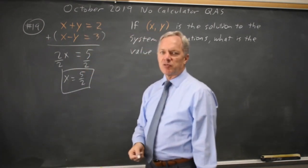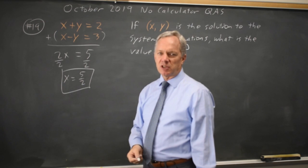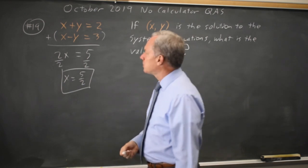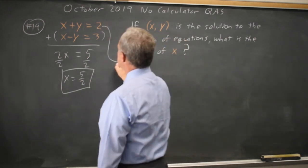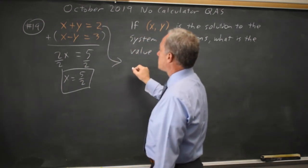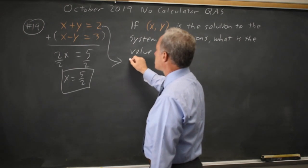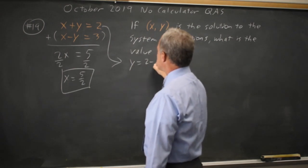Alternatively, many of us have one go-to method for solving systems that we always use. For example, we could solve the first equation for y. Subtract x from both sides: y equals 2 minus x.